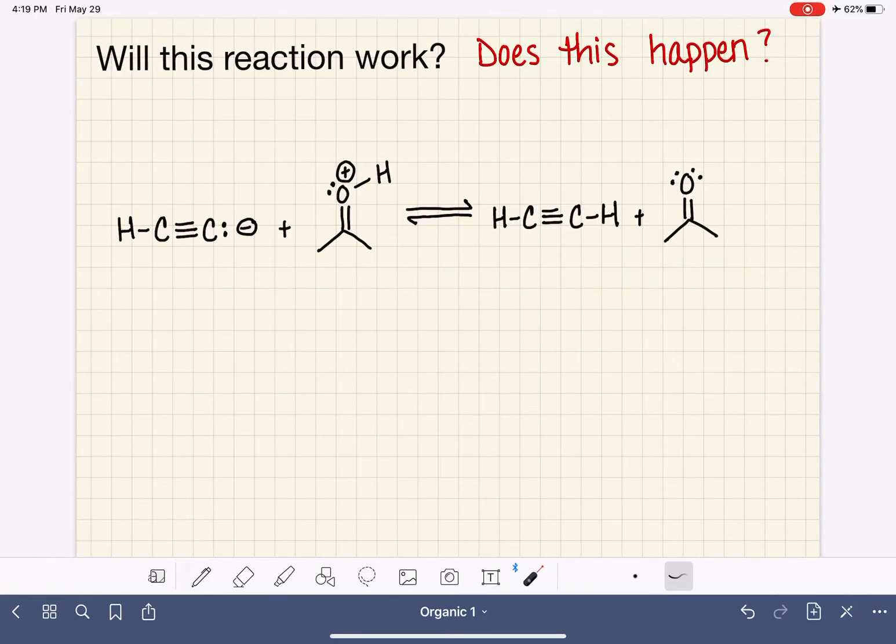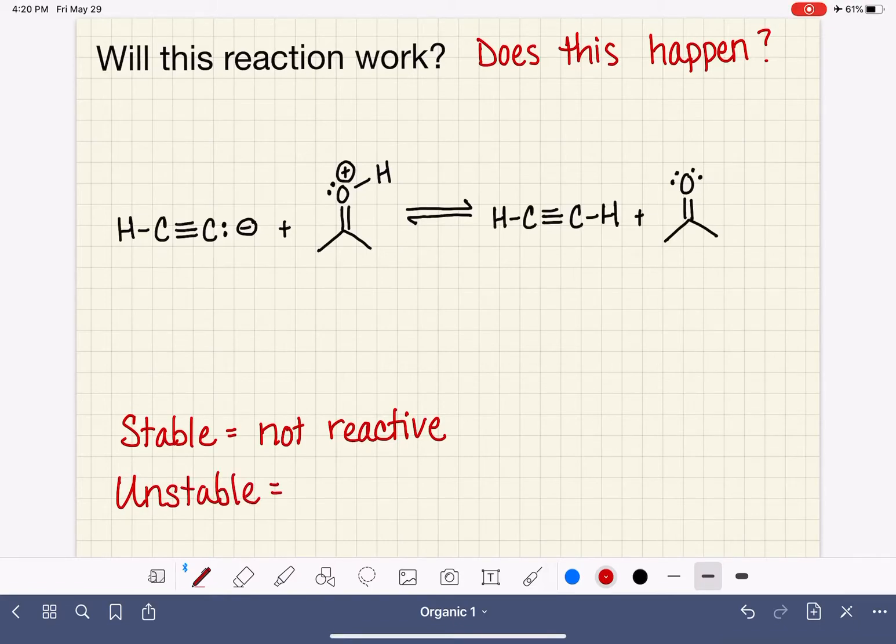To answer this question, we're going to fall back on our understanding of stability and reactivity. If a molecule is stable, which means it's happy and calm, it is not reactive. And if a molecule is unstable, that means there's something wrong with it in terms of its bonding situation. It's unstable, so it is reactive.